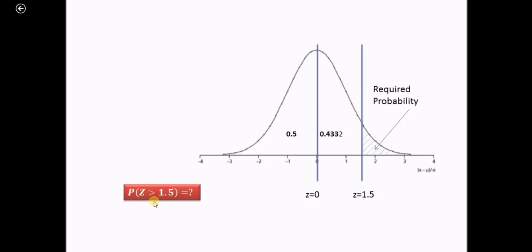As we have seen, we have to find out the probability of z greater than 1.5. So z greater than 1.5 means this is the portion, this portion is our required probability.